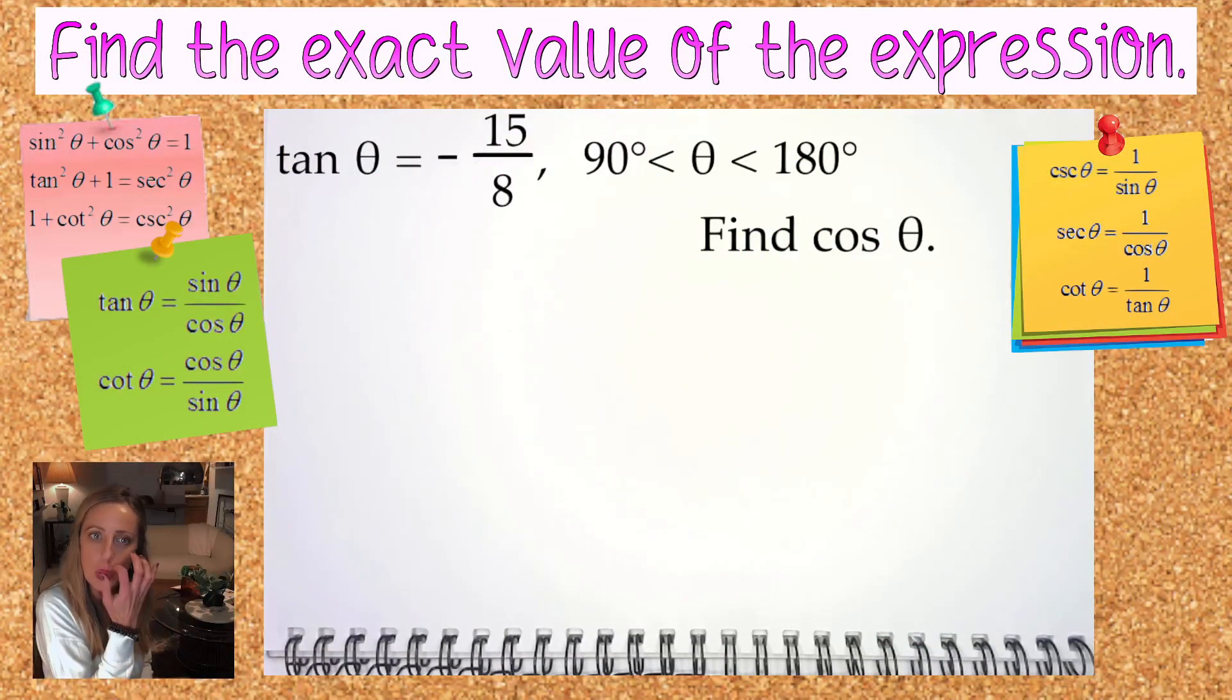Hi everyone, in this video we are going to work with this given information to find the cosine of theta. Theta is being described by two pieces of information. The one piece of information we are given is that tangent of theta is equal to the negative ratio of 15 over 8, and we know that theta can be found in between 90 degrees and 180 degrees.